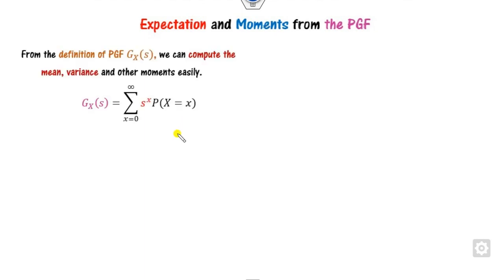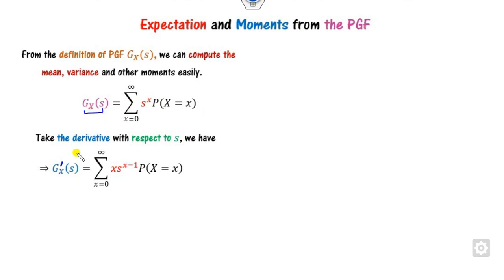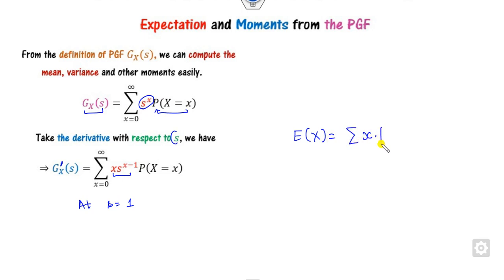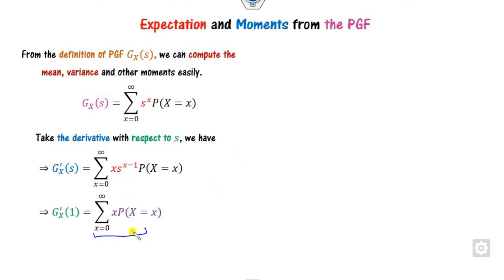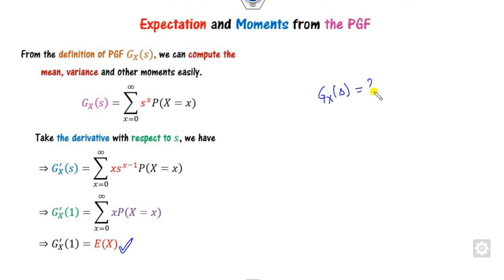Now how you can find the expected value and the moments — that is the mean, variance, and higher powers. If you take the first derivative of G(S) with respect to S, since the probability mass function part is constant with respect to S, you take the derivative of S^X only. Now take S equal to 1 — the coefficient of S is eliminated, and what remains is nothing but the expected value E[X]. So once you derive the probability generating function, take the first derivative at S=1, which gives you the mean.